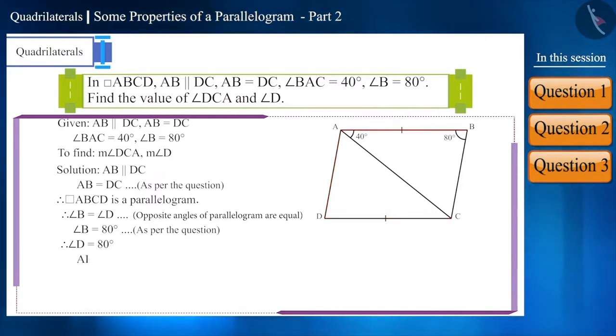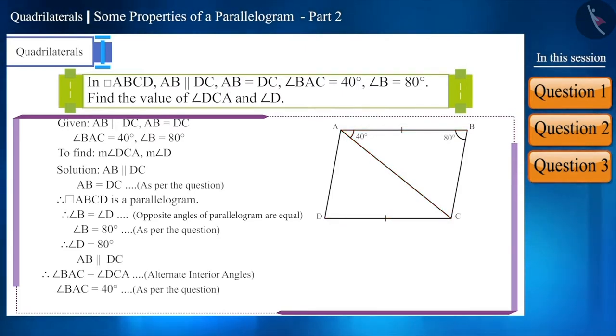And since side AB is parallel to side DC and AC is the diagonal, therefore, angle BAC will be equal to angle DCA as these are alternate interior angles. Therefore, angle DCA will also be 40 degrees.